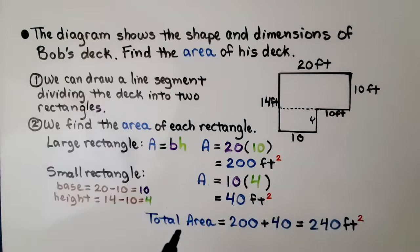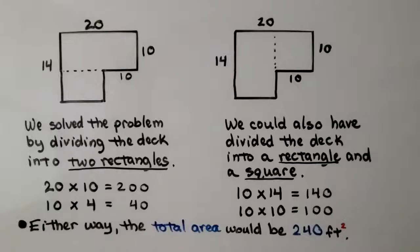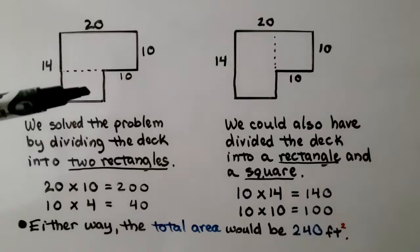We total the area. 200 plus 40 is 240 feet square. So, we solved the deck by dividing it into two rectangles. A big one and a small one.